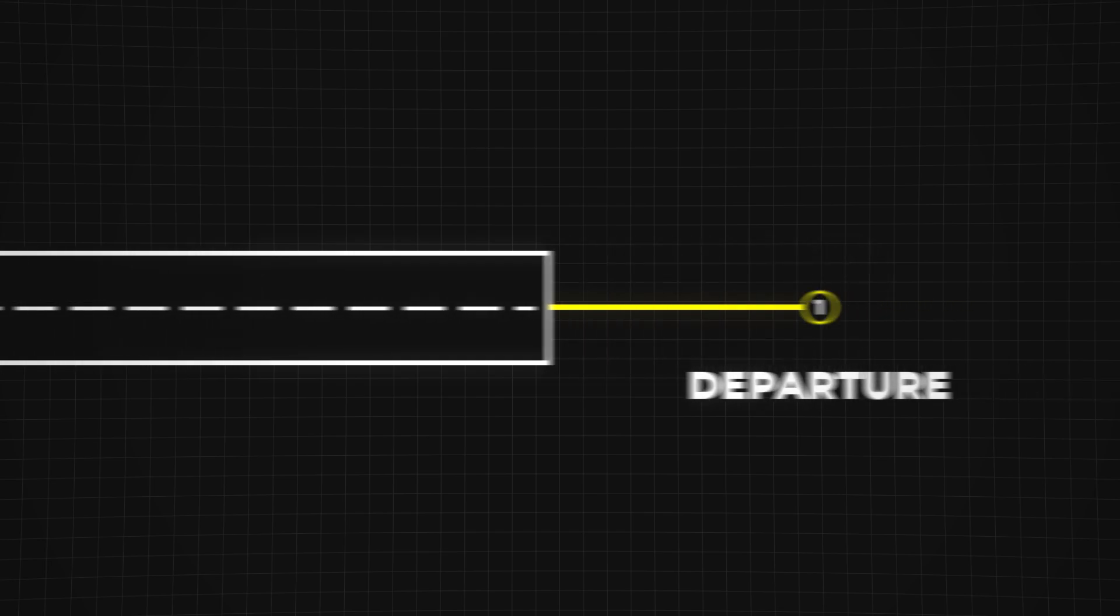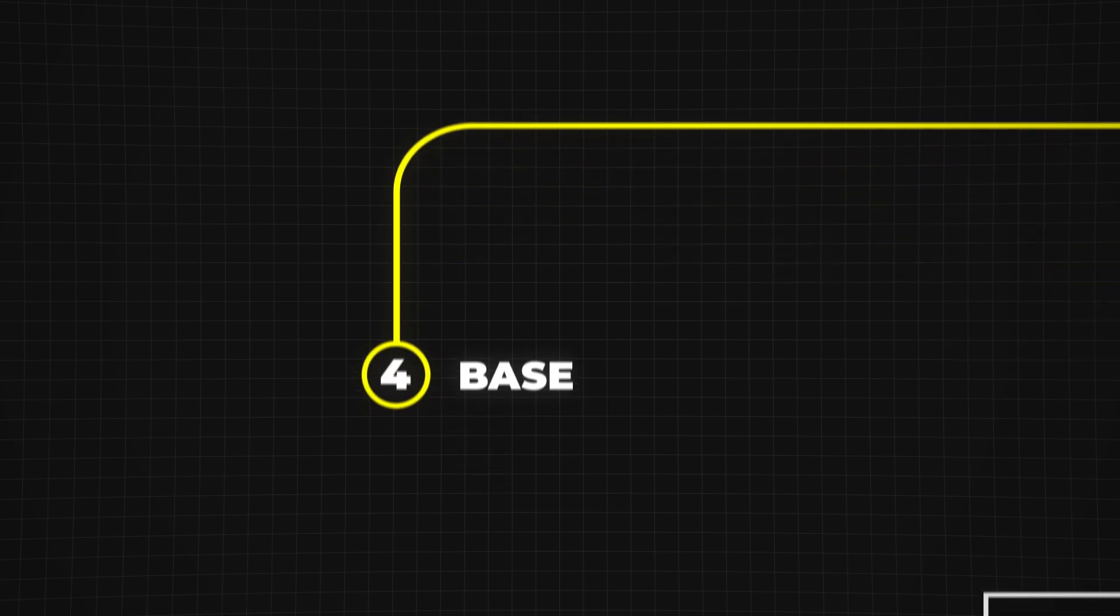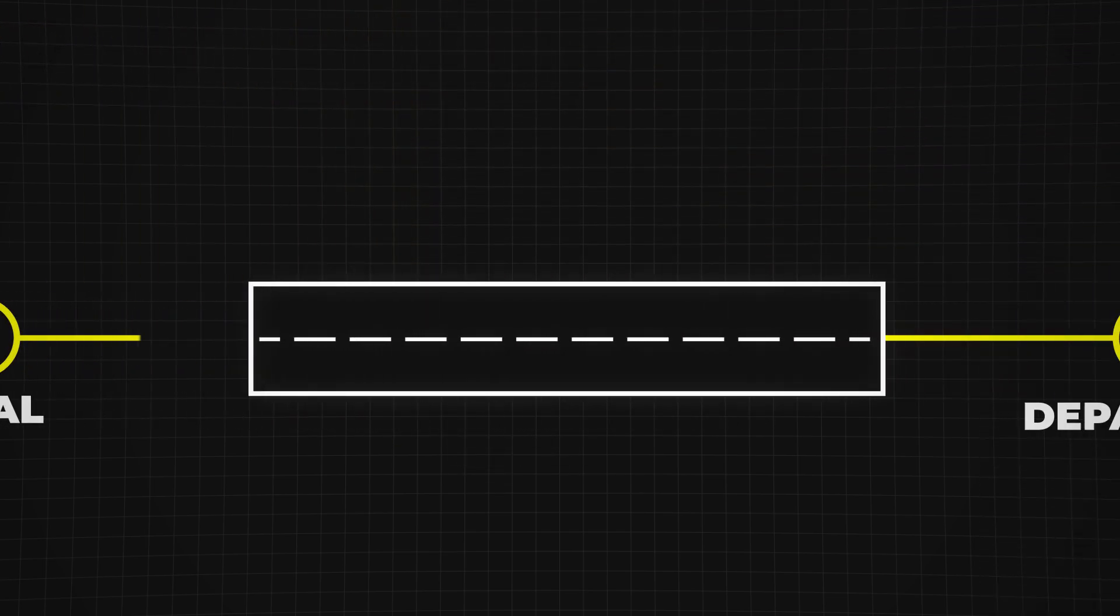The basic traffic pattern has a rectangular shape and consists of five legs: departure, crosswind, downwind, base, and final.